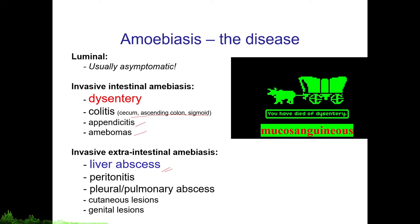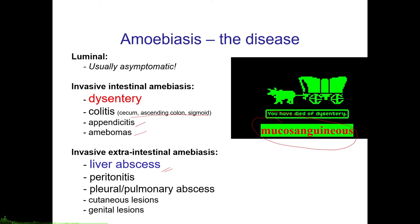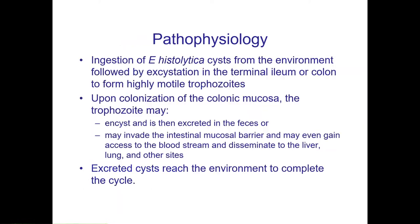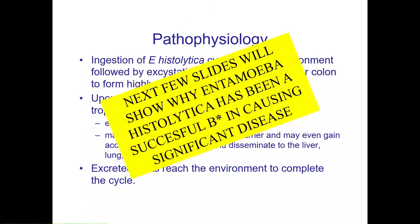The type of dysentery associated with Entamoeba histolytica is called mucosanguinous diarrhea. Mucosanguinous stools usually account for 90% of invasive intestinal manifestations. The pathophysiology of Entamoeba histolytica and its disease entity will be explained in the next few slides.